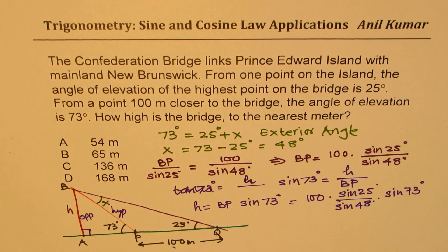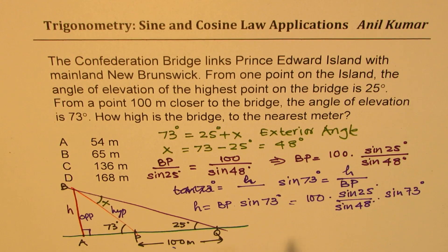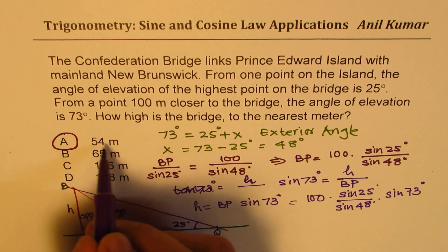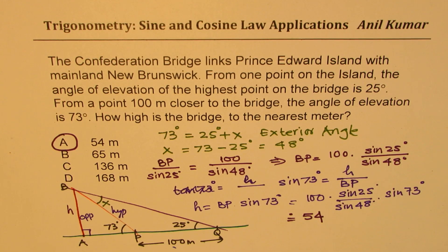Do you see a formula here? All sines. The height can be found by multiplying this distance by sine of 25 and sine of 73, divided by sine of the difference angle 48 degrees. Once you do this calculation with the help of a calculator, you get a value approximately equal to 54 meters. So that is the answer for this particular question.